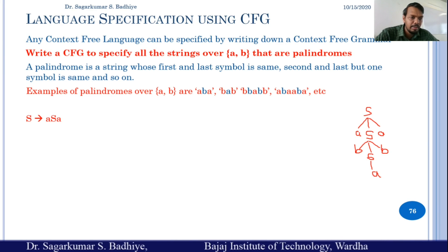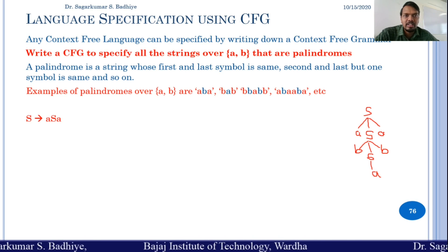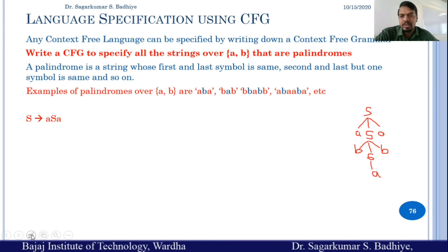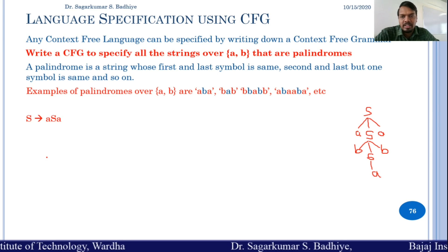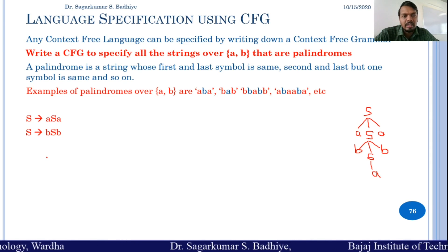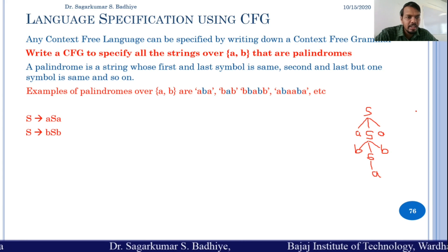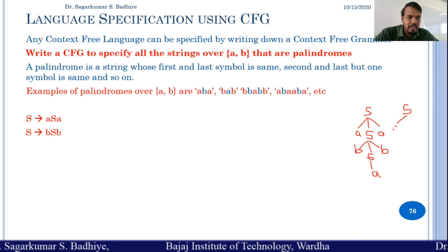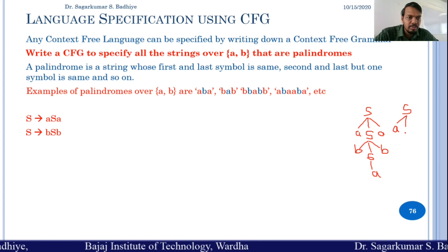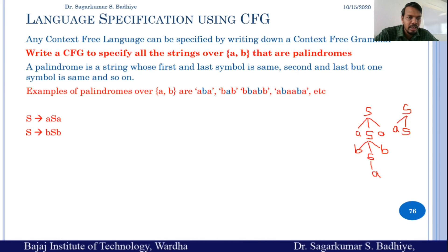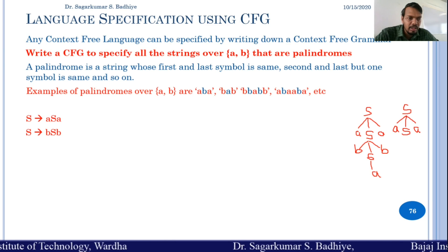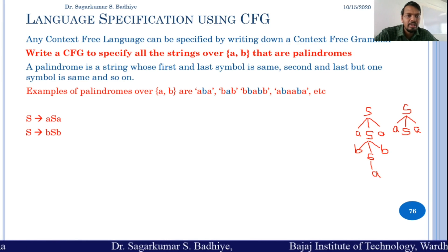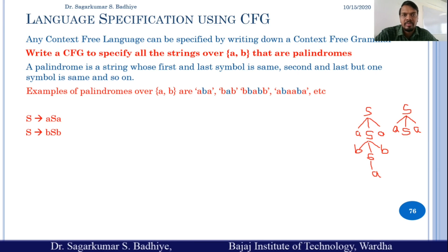A string like A B A B A, when read in the reverse order, is the same: A B A B A — both are the same. So we would be adding additional production rules. The next production is S derives to B S B. Whenever you want to produce an even-length string such as A A, the rule S → A S A is used, and when you read A A from start or in reverse it sounds the same.